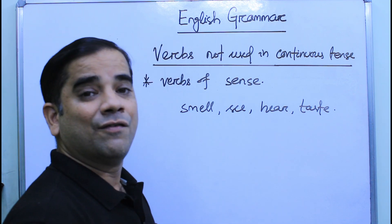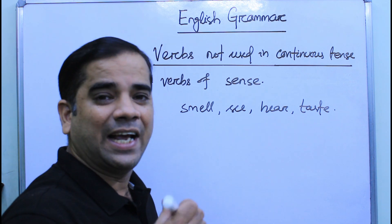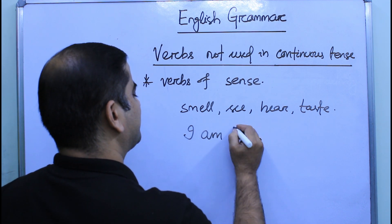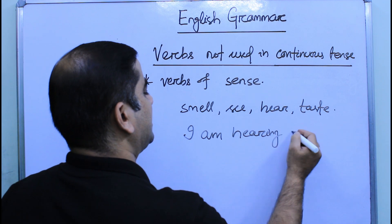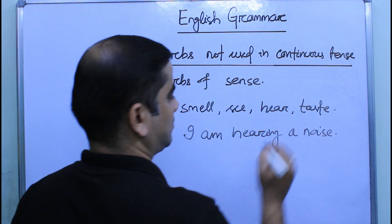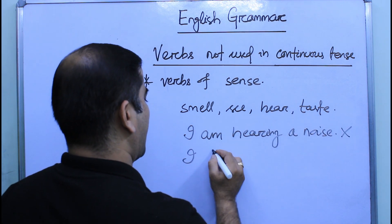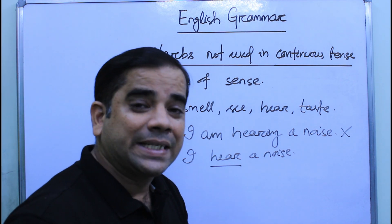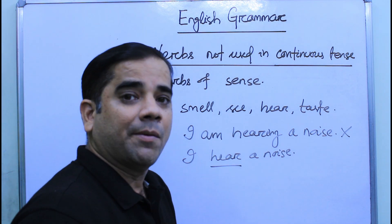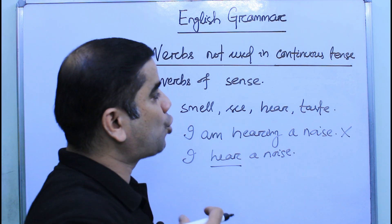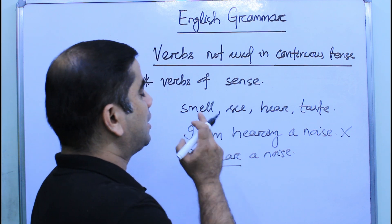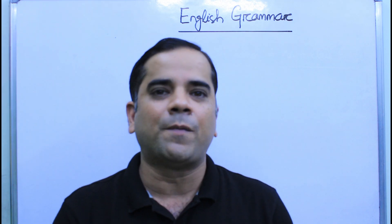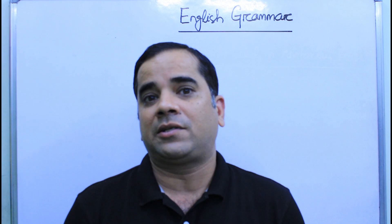We should also not use present continuous tense with verbs of sense — such as smell, see, hear, and taste. For example, instead of 'I am hearing a noise,' we should say 'I hear a noise.' Even though it is happening at the present time, these verbs of sense should not be used in present continuous tense.